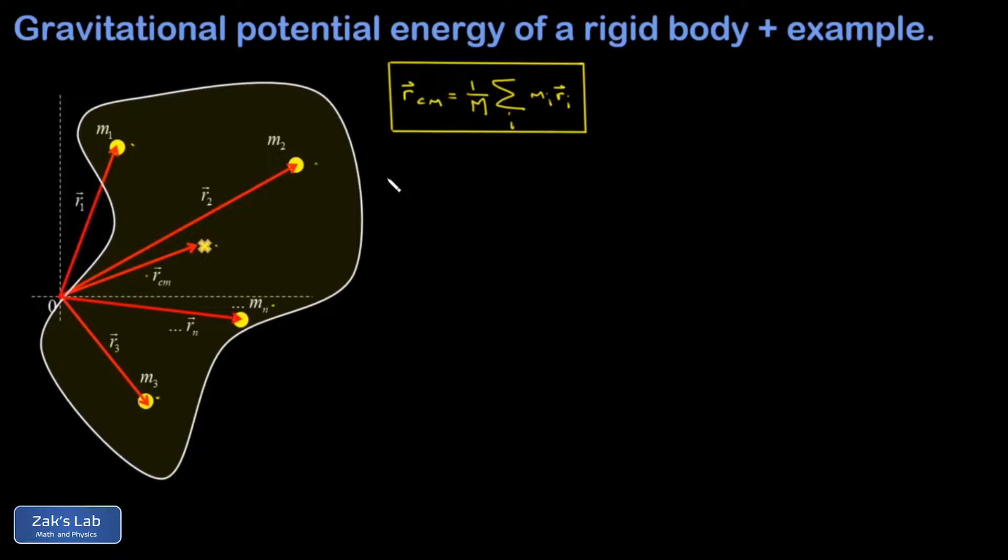That's a vector equation and any vector equation can be broken down into its components. So I could write down the x coordinate of the center of mass as one over the total mass times the sum of mi times the x coordinate of the i-th mass.